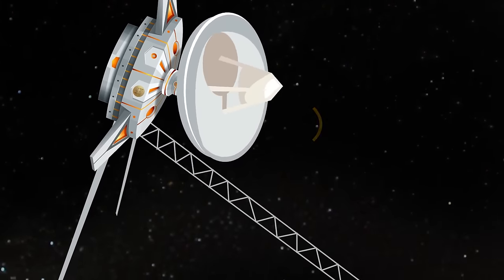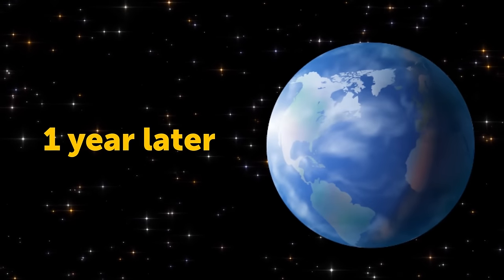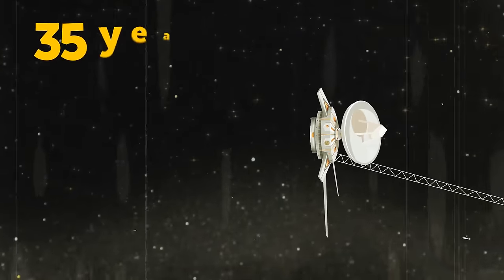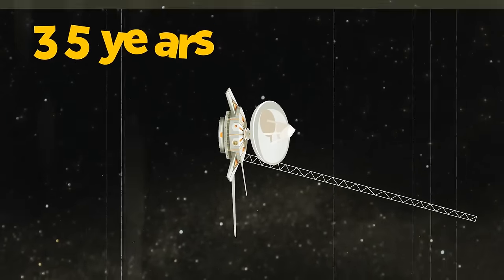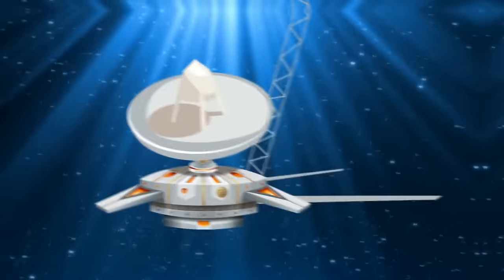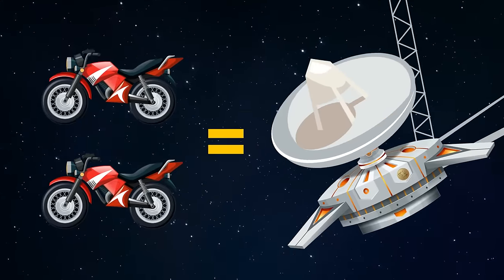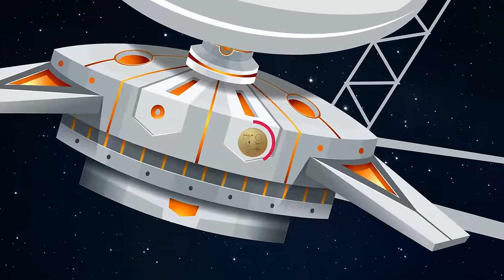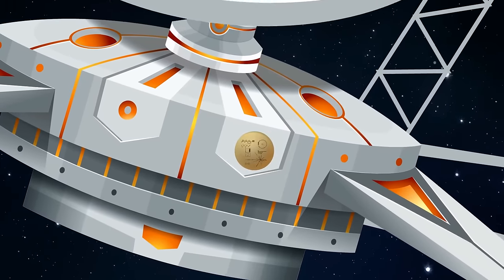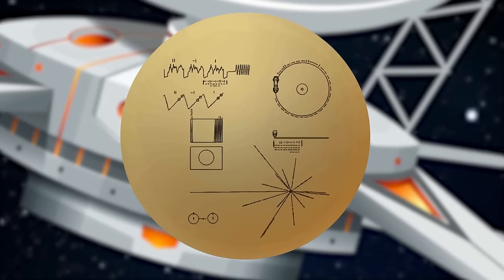Next, we pass gas giants Jupiter and Saturn. These are the largest planets in the solar system. They're also the heaviest, even though they don't have a solid surface. Then we travel by Uranus and Neptune. They're called ice giants.